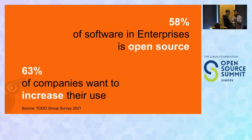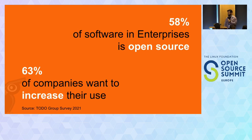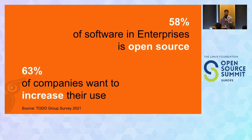Let's take a step back and consider why we are all here today at the open source summit. At the core of open source, we care about using, sharing, and collaborating in the creation of software. With its roots in the free software movement and ensuring the rights of software users, open source has evolved from being the realm of hobbyists and volunteers to the enterprise.